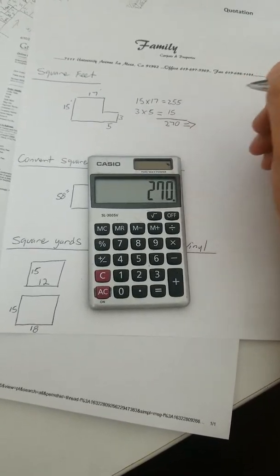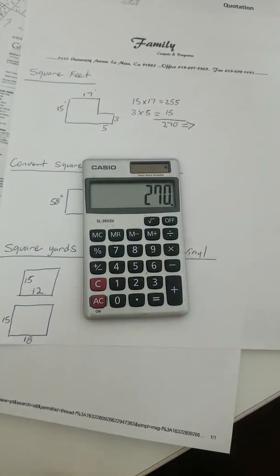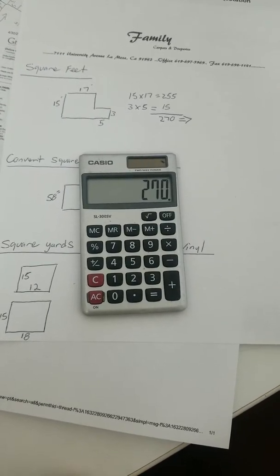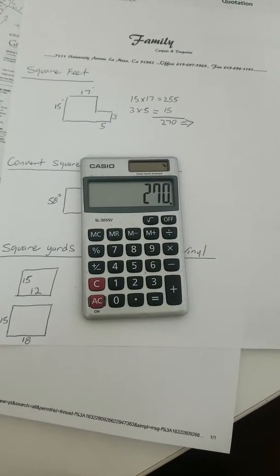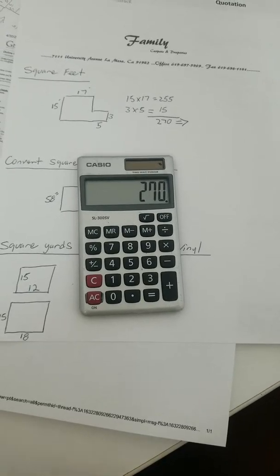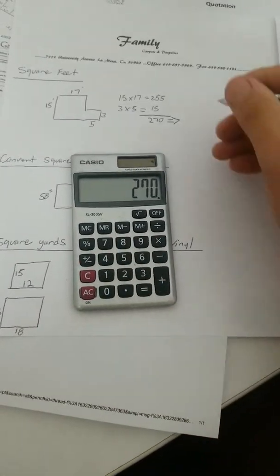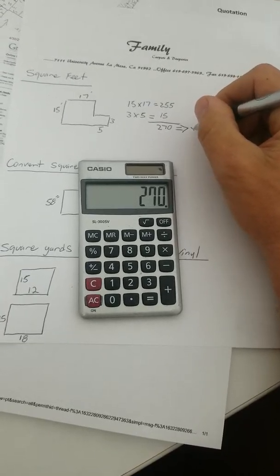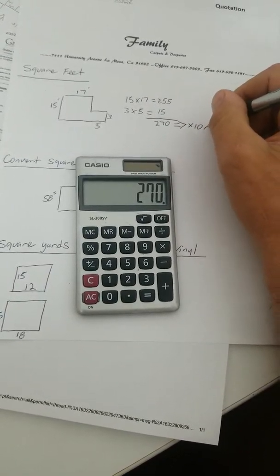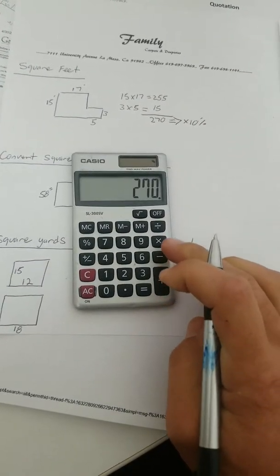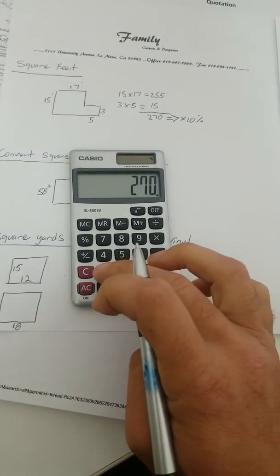Now, what we do, we have to add a certain percentage for overage. What that means is any kind of cuts that we do, this is industry standard. So, 270 square feet, we're going to times that by 10%. So, we're going to add 10%.